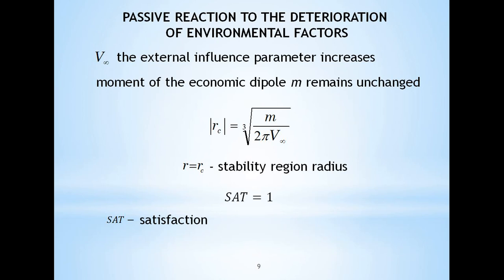The most trivial in this case is the passive strategy, which is characterized by the fact that the moment of the economic dipole m remains unchanged. With such a strategy of economic behavior, it is obvious that the greater the external influence, the smaller the size of the zone of stability, the fewer opportunities. So, if environmental indicators deteriorate by two times relative to the initial value, then the available opportunities will decrease by 37%, but the attitude towards such changes will remain neutral. The natural consequence of such economic behavior is the gradual depletion of available resources.